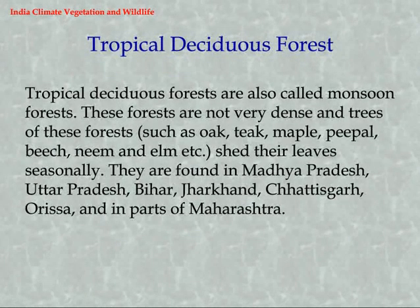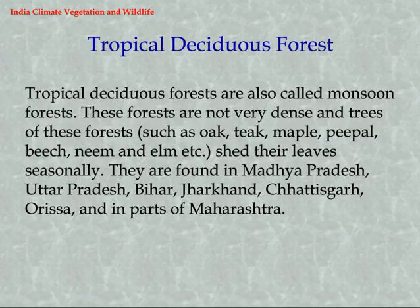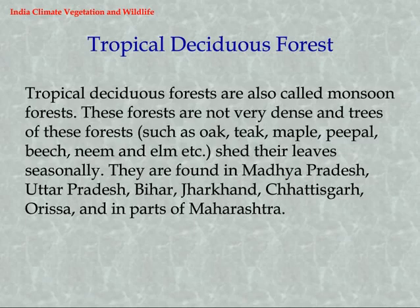Tropical Deciduous Forest. Tropical Deciduous Forests are also called Monsoon Forests. These forests are not very dense and trees such as oak, teak, maple, peepal, neem, elm, etc. shed their leaves seasonally. They are found in Madhya Pradesh, Uttar Pradesh, Bihar, Jharkhand, Chhattisgarh, Orissa, and parts of Maharashtra.